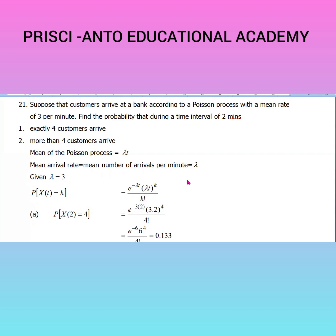So, time t is equal to 2, and lambda is equal to 3. The formula is: the probability that X(t) equals k is equal to e to the power of minus lambda*t, multiplied by (lambda*t) to the power k, divided by k factorial.